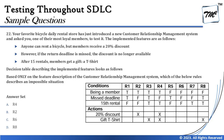The implemented features have three conditions. First, anyone can rent a bicycle, but members will receive a 20% discount — so the discount applies only to members. Second, if the return deadline is missed, the discount is no longer available. Since the discount only applies to members, this condition also applies to members alone. Third, after 15 rentals, members will get a gift — a t-shirt.